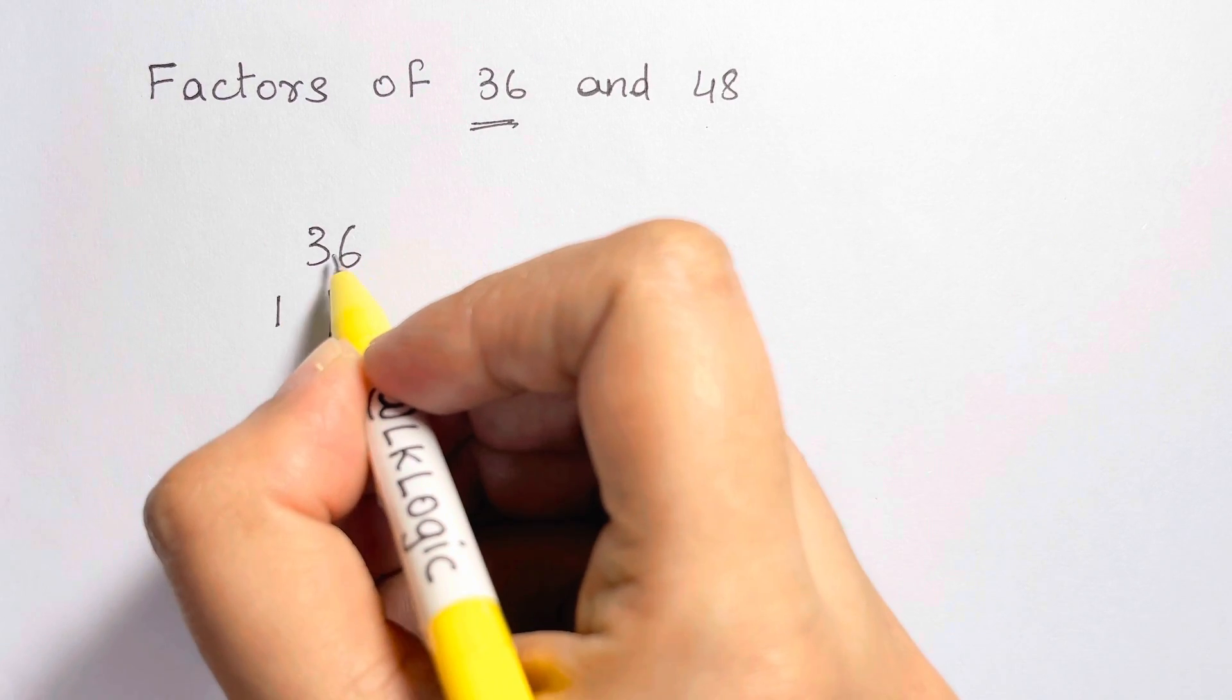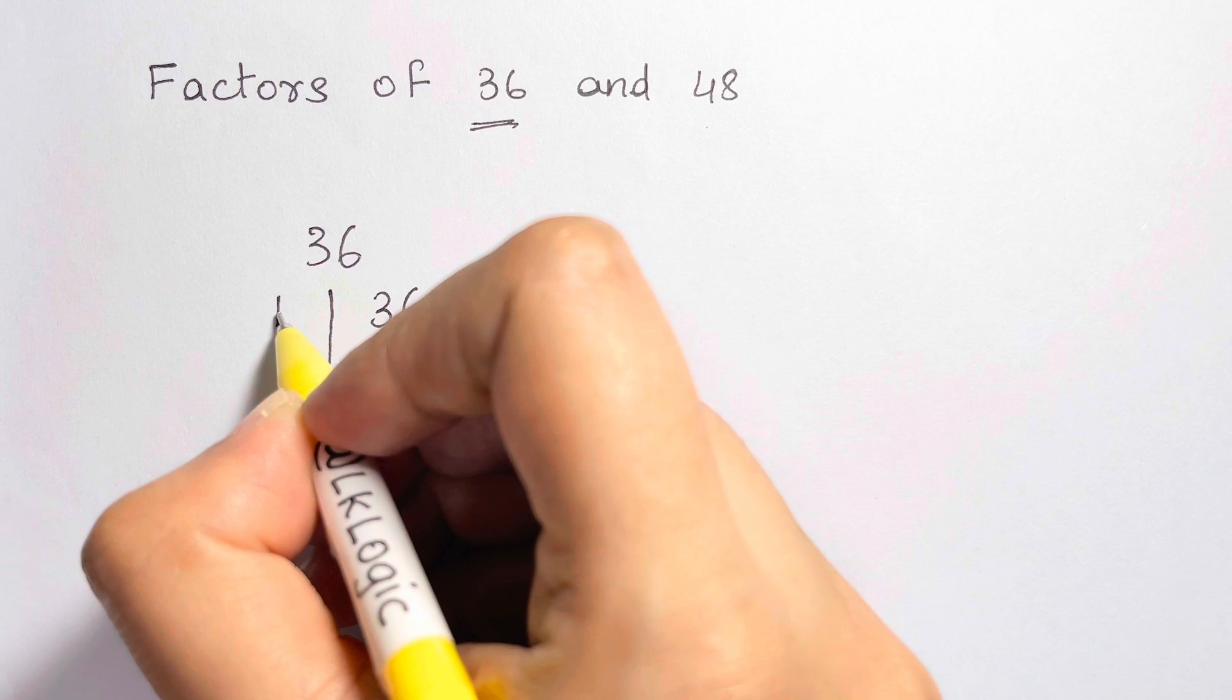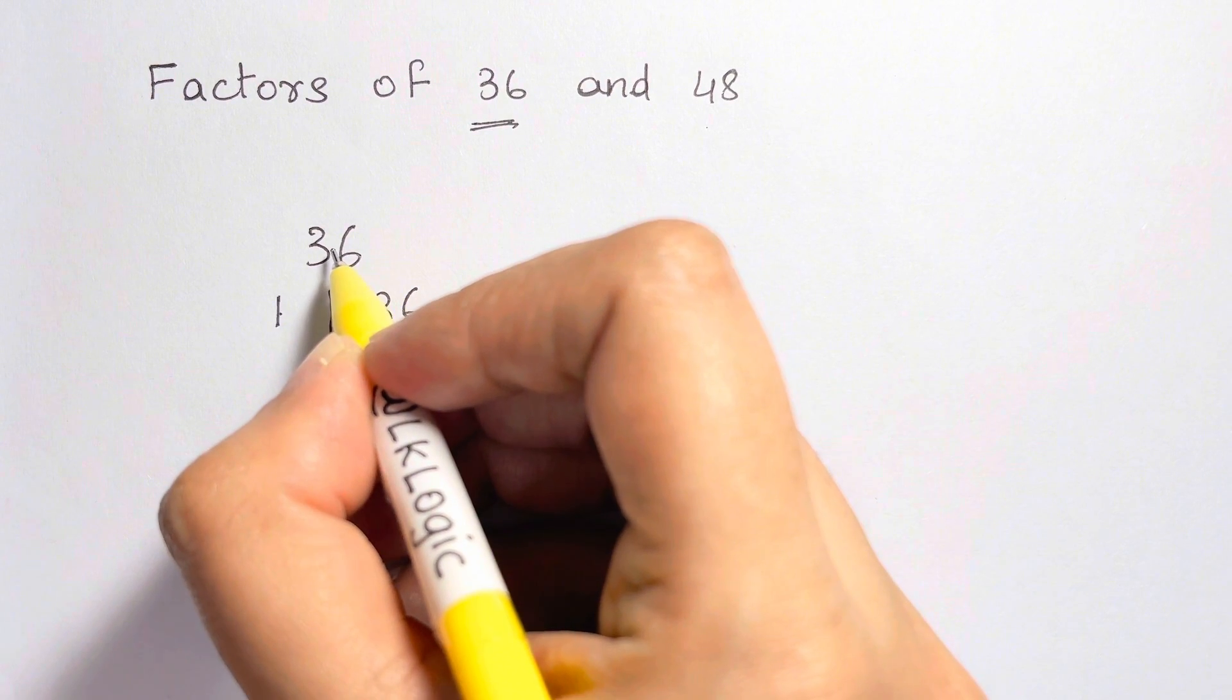And 36 divided by 1 gives me 36. Now, if I see, 1 times 36 gives me 36. Yes.